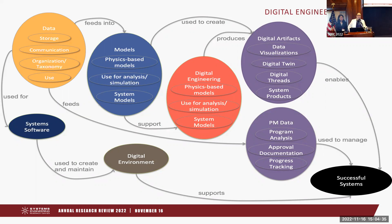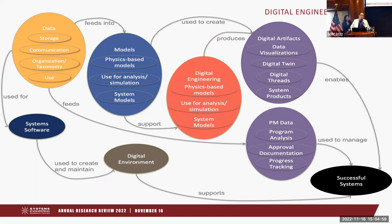There's also programmatic data feeding into this. And the data is also part of the software we use to support this — that might be Cameo, Rhapsody, Core, or a number of other tools. There's a software element and an understanding of what that software can and can't do. That software and the data come together to really create your digital environment. The idea is that if you have all of these things flowing together properly, you'll be able to successfully engineer and deliver systems.